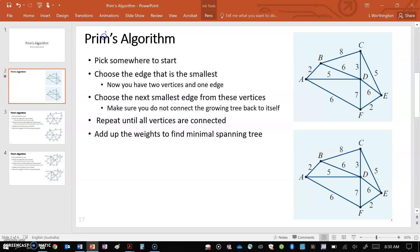Pick up a pen and Prim's Algorithm says pick somewhere to start. Let's start with A. Choose the edge that is the smallest, that would be 2. Now we've got two vertices A and B and one edge, so that's where we're at.